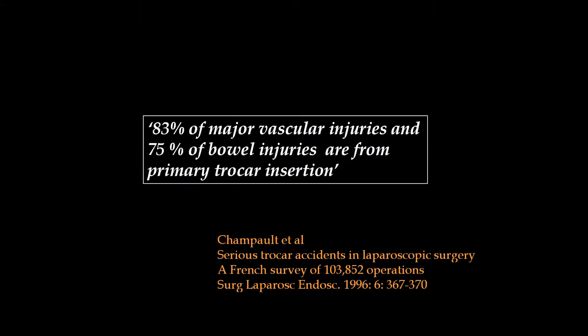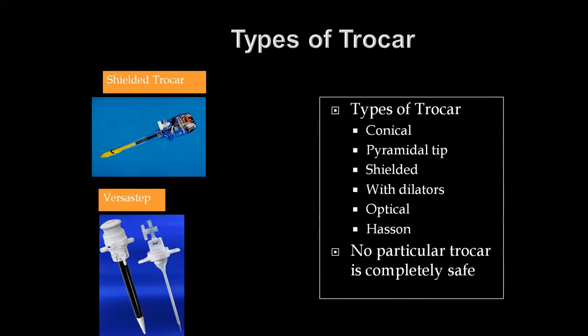83% of major vascular injuries and 75% of bowel injuries are from primary trocar insertion. Because the primary trocar insertion is blind, it is inherently dangerous — we should realize that. There are various types of trocars with different tip designs: conical, pyramidal, shielded, with dilators, or optical and Hassan's trocars. However, we should also realize that no particular trocar is completely safe.